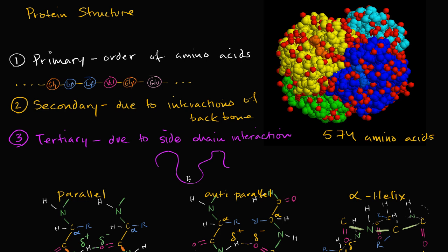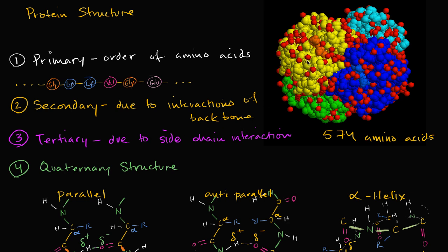Now, any protein made up of a single polypeptide is only going to have primary structure, secondary structure, and tertiary structure. But if we're dealing with something like hemoglobin that's made up of more than one polypeptide, then we're going to talk about quaternary structure. This is all about how the different polypeptide chains come together to form the larger complex — the arrangement of multiple peptide chains. In the case of hemoglobin, we had four.